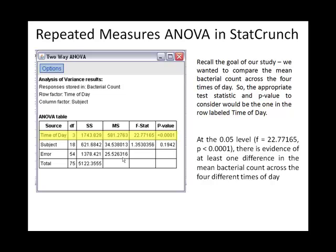At this point in the one-way ANOVA, we would start looking at multiple comparisons, because rejecting the null doesn't tell you where the differences are. You may have noticed in the StatCrunch dialog box that the option to check for multiple comparisons is missing. Unfortunately, StatCrunch won't do these calculations for us, so in the notes the multiple comparisons have been done in a different program called Minitab.